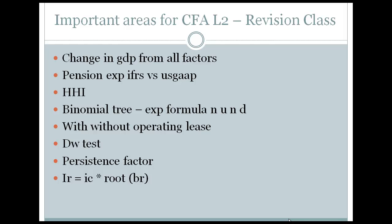Moving to the next topic in this revision session: what is the difference between pension and pension expense in IFRS and US GAAP? This topic is important. Components of periodic expense in P&L are: current service cost, interest cost plus expected return, amortization of actuarial gains/losses, and amortization of past service cost. There is a key difference between IFRS and US GAAP here.